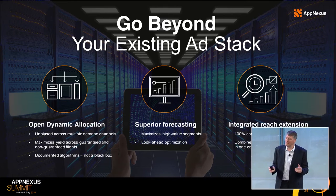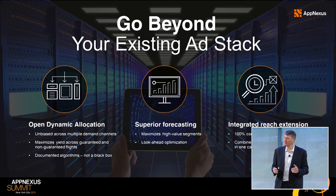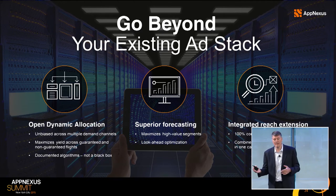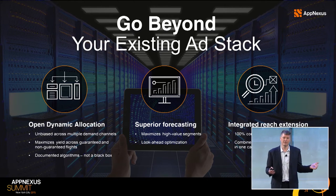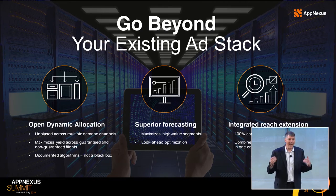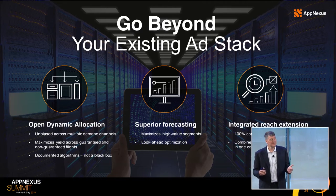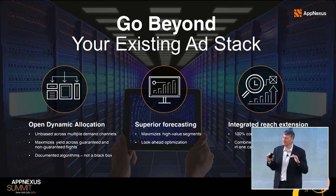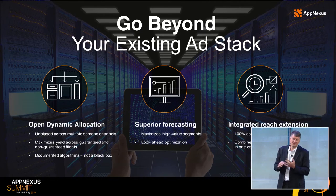One differentiator is open dynamic allocation. This is really important for people to understand. It was part of the header bidding conversation — something Mike Smith referred to at Hearst. How important it is to make sure that all of the demand that comes in gets to compete on a level playing field, whether it's guaranteed or non-guaranteed, no matter what channel or buyer it comes through, so that you can optimize your overall yield.